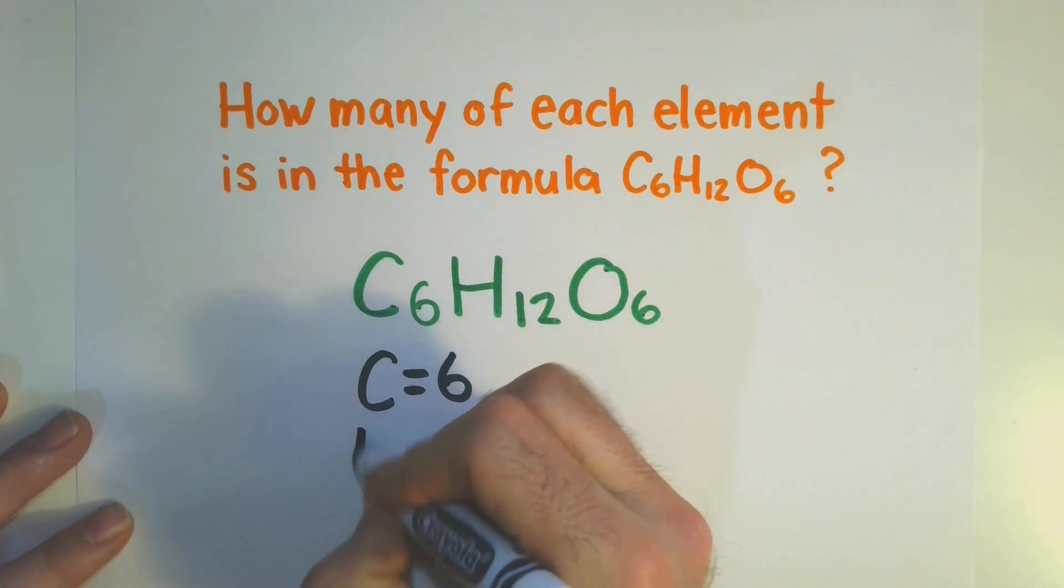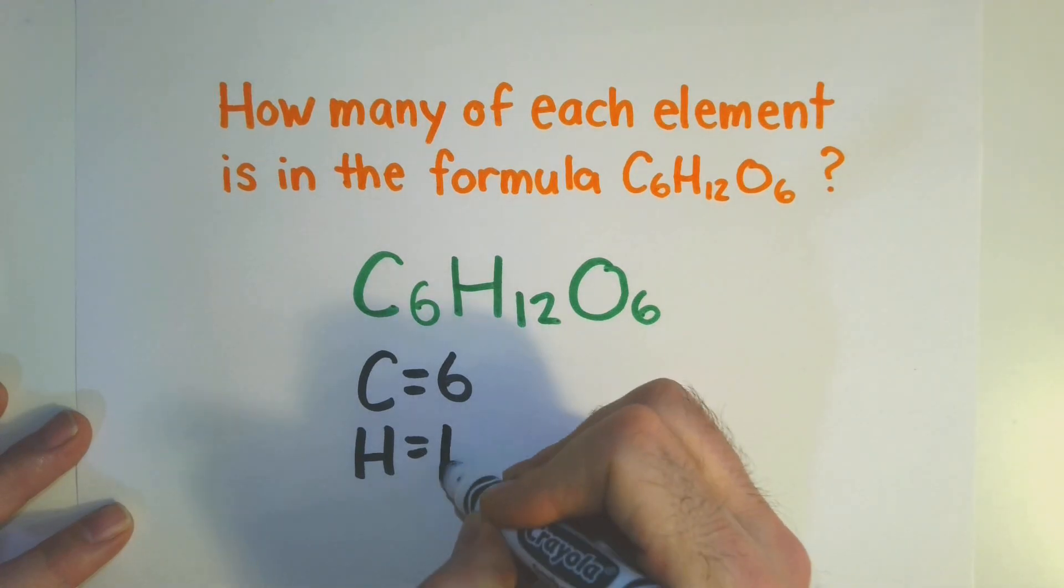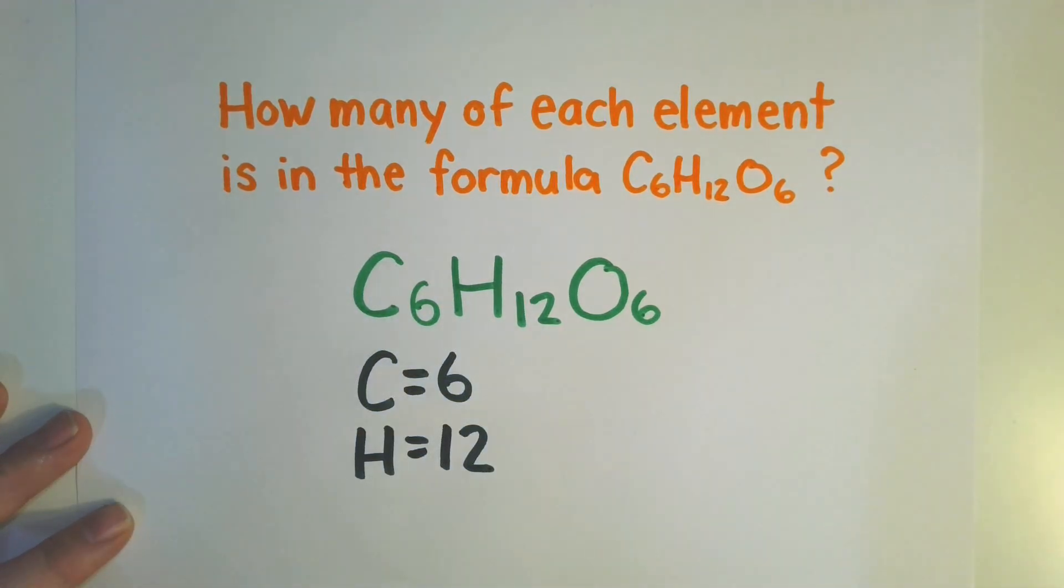For hydrogen, we're going to look at that subscript again. Well, that subscript is a 12. So that means for hydrogen, we have 12 atoms.